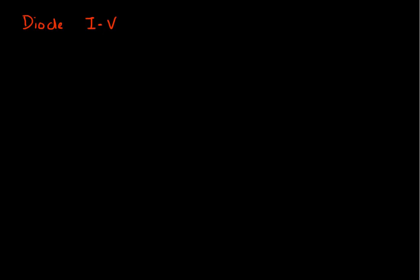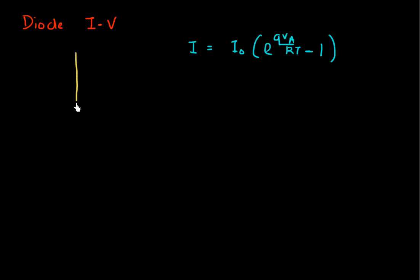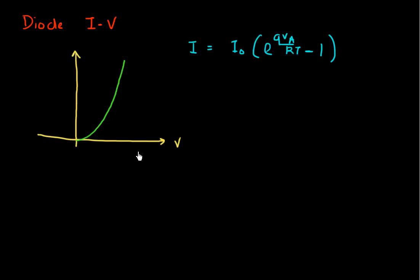For a p-n junction diode, we know about its IV relationship. I can write its current-voltage relationship by this formula, where it's exponentially dependent on the applied voltage. If I make a plot of current versus voltage, I would expect it to rise exponentially if I apply a voltage in the positive direction. This is what I call the forward bias regime.